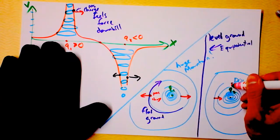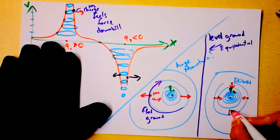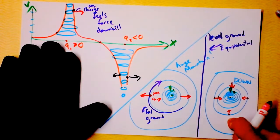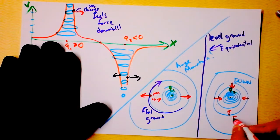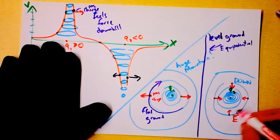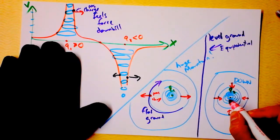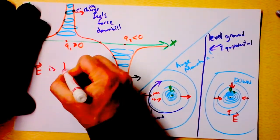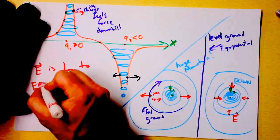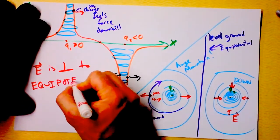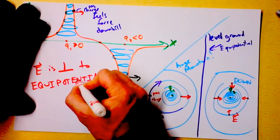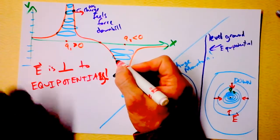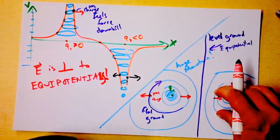The cool thing about the forces that would be felt by a small positive test charge is that the direction of the force felt by the small positive test charge defines the direction of the electric field. So these vectors are, in fact, electric field vectors. And electric field vectors are always normal to equipotentials. That's worth writing down. Electric field is always normal to equipotentials.